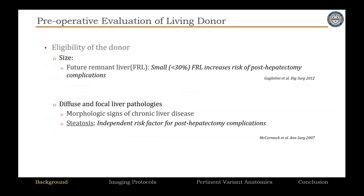Regarding size criteria for donor eligibility: studies show that if the future remnant liver — the portion remaining in the donor's body — is less than 30%, that significantly increases the risk of complications. This was based on hepatectomy patients. However, this is usually not the case, since donors typically undergo left lateral segment resection or lobectomy, meaning the patient ends up with more than 30% remnant — so this is rarely a reason to exclude a donor.